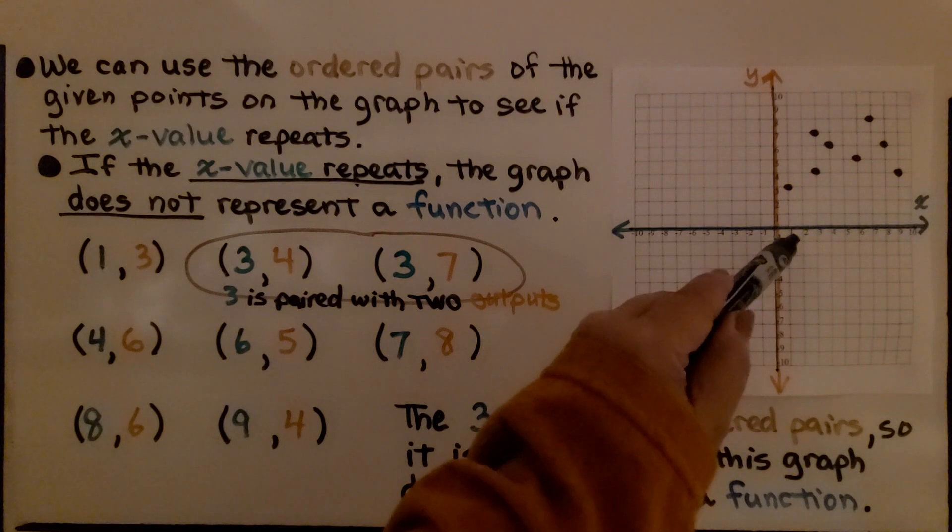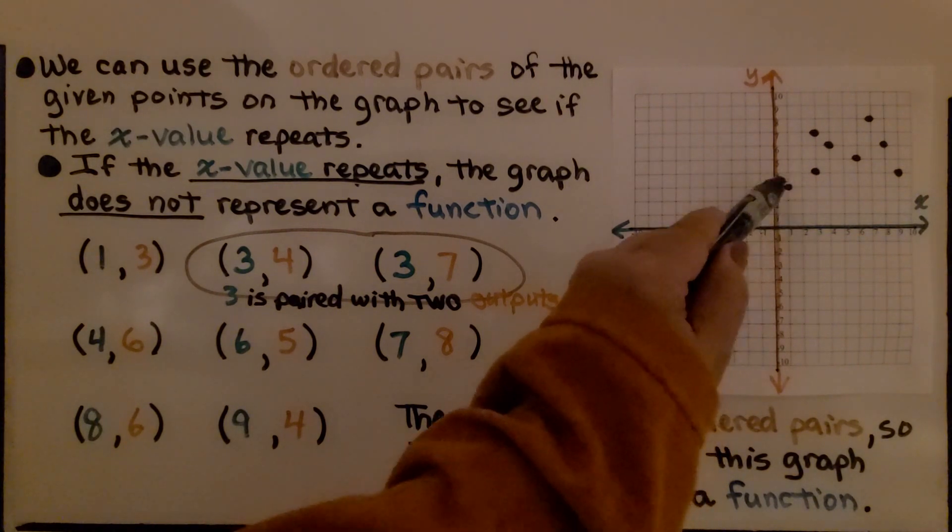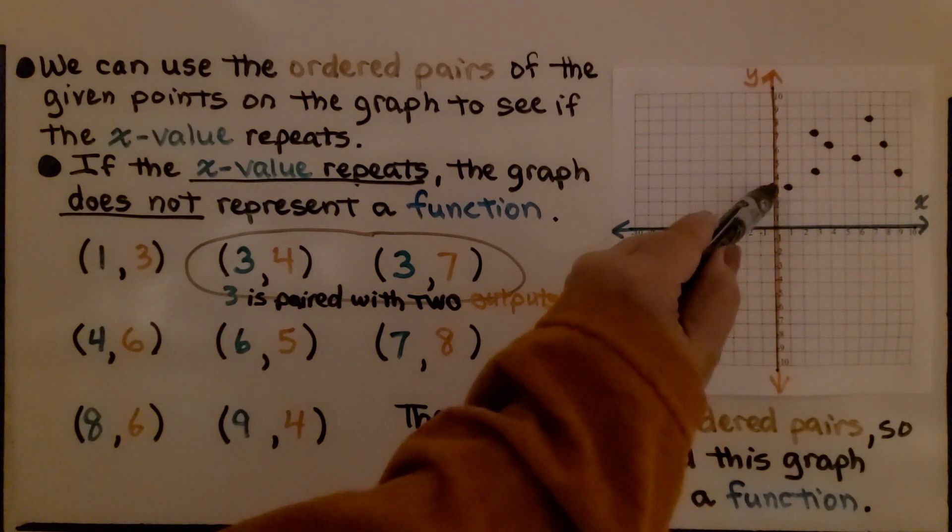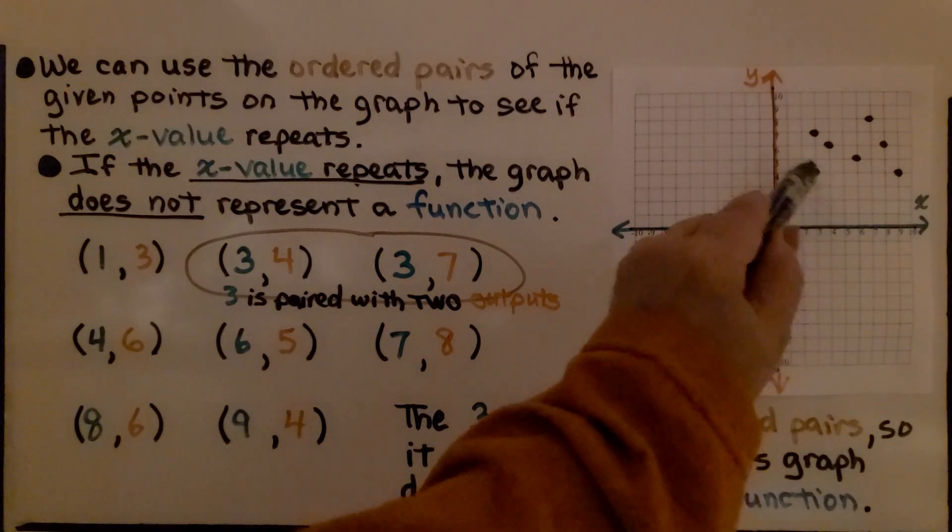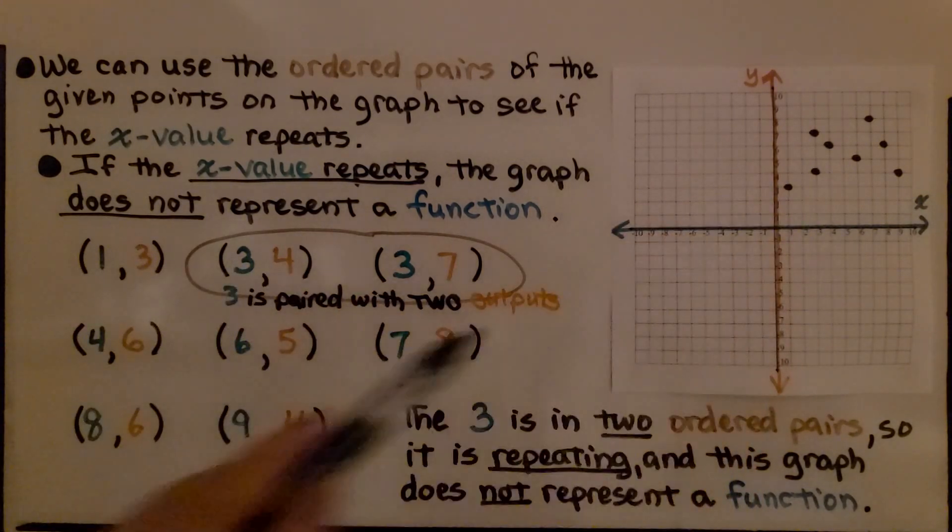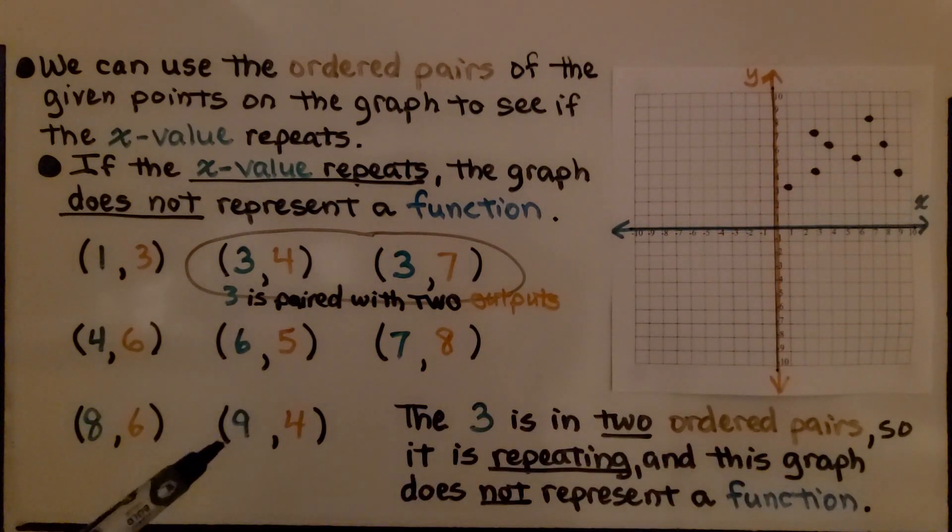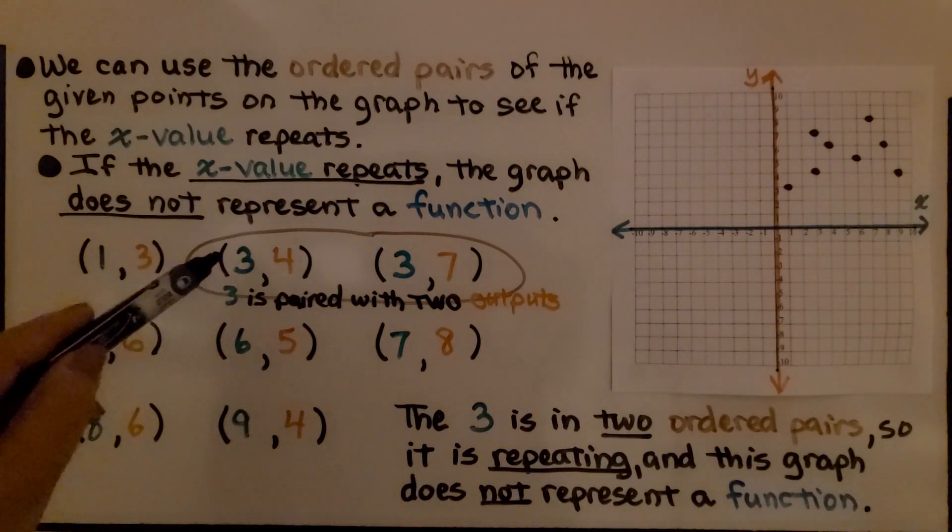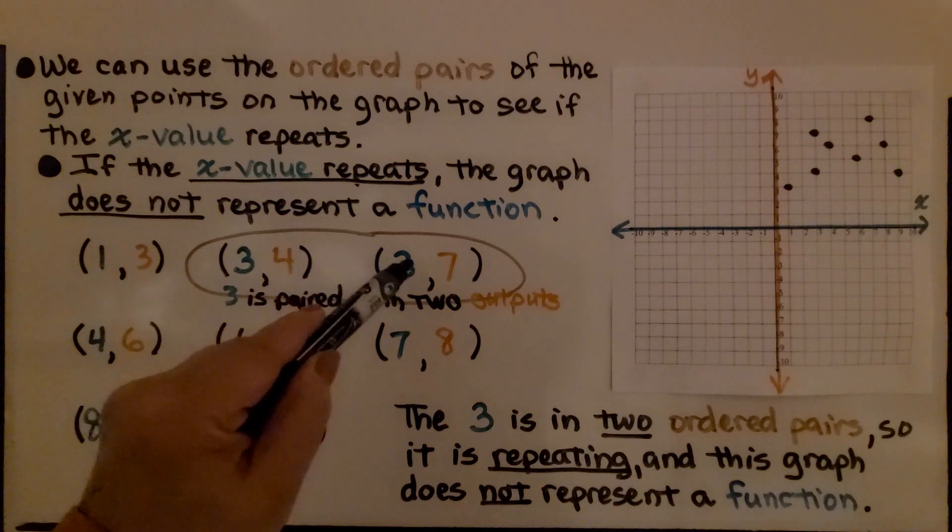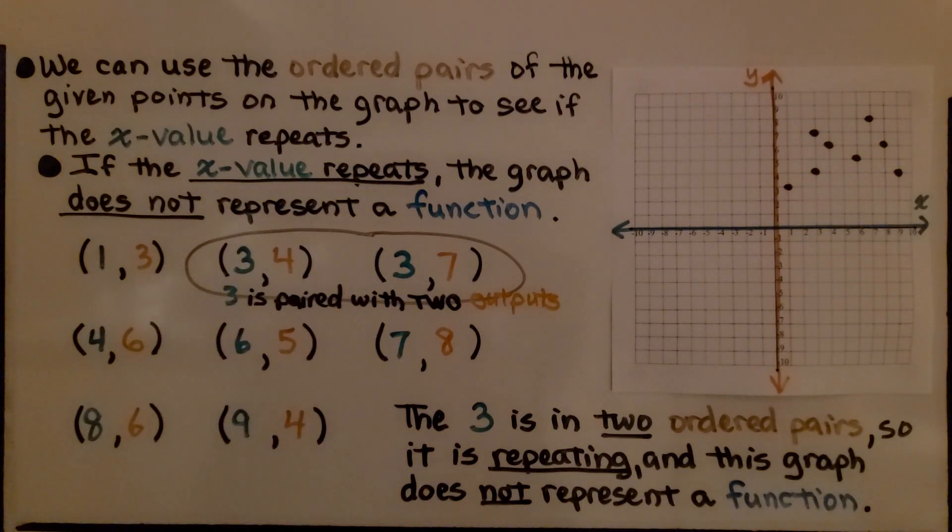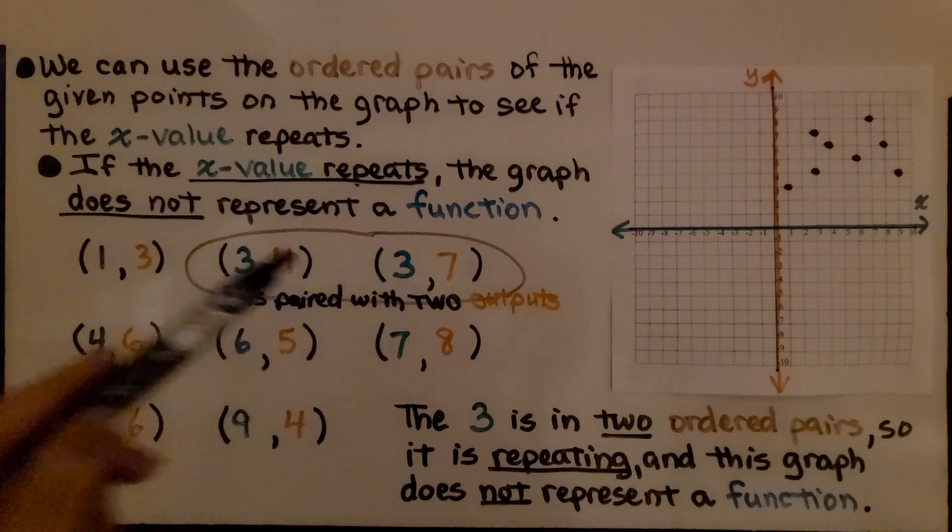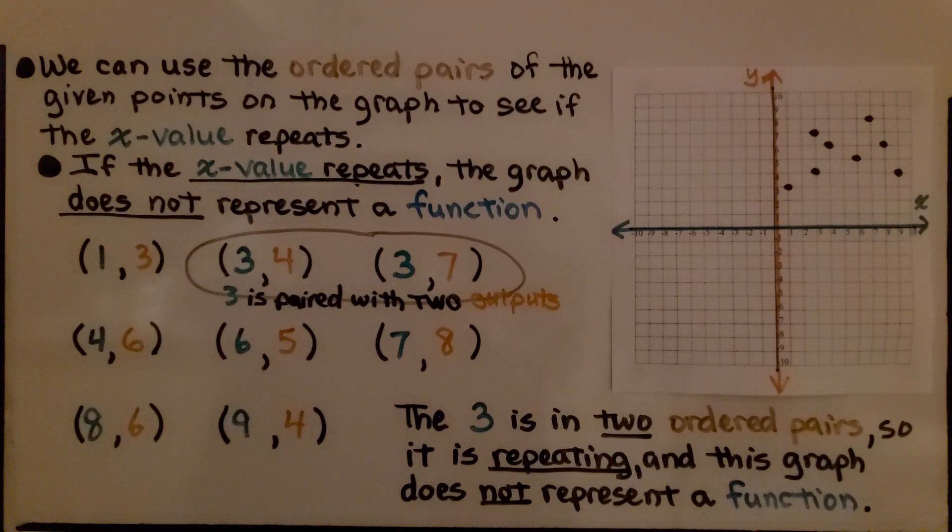I took all the points: one for x, three for y; three for x, four for y. I wrote down all the ordered pairs for these points. If you look, this three is paired to two different outputs, a four and a seven. The three is in two ordered pairs, so it's repeating and this graph does not represent a function.